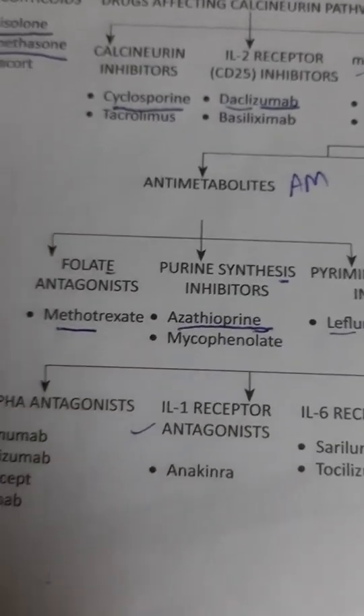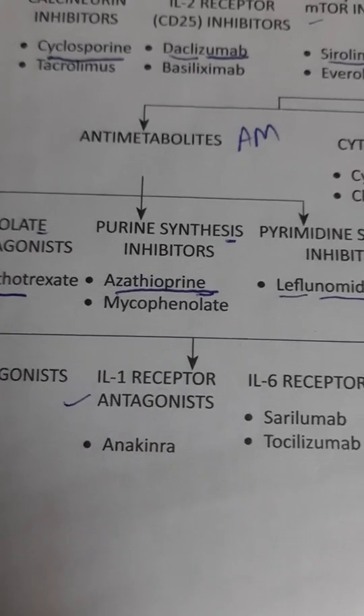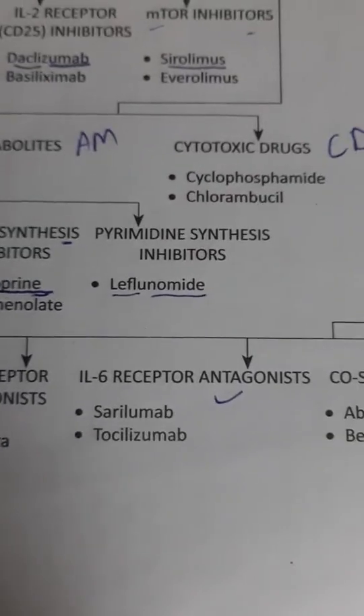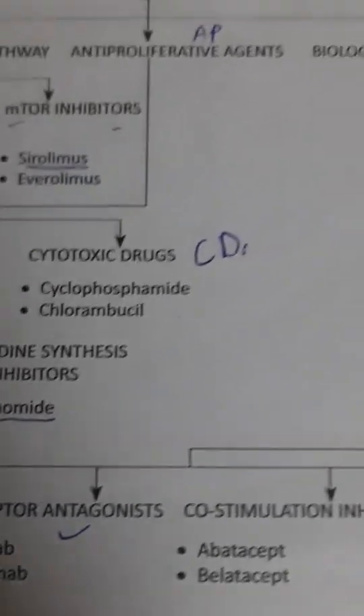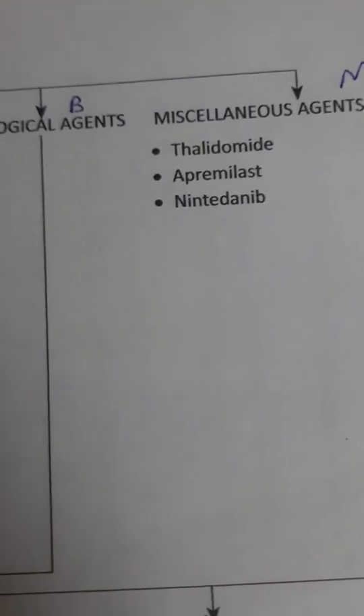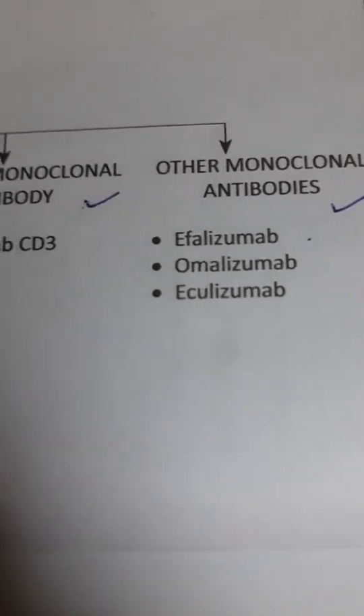Antimetabolites include the folate antagonist methotrexate, the purine synthesis inhibitor azathioprine, and the pyrimidine synthesis inhibitor leflunomide. Biological agents include TNF-alpha antagonists, interleukin-1 receptor antagonists, interleukin-6 receptor antagonists, costimulation inhibitors, anti-CD3 monoclonal antibody, and other monoclonal antibodies. Miscellaneous agents include thalidomide.